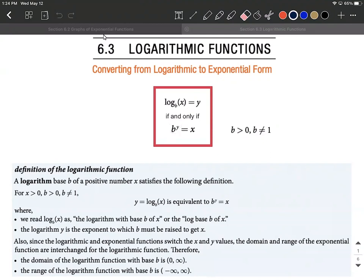Some other things to note on this: when we're dealing with exponential functions we said our base had to be positive, had to be greater than zero and it couldn't equal one. The same thing is true with our base—it has to be greater than zero or positive and not equal to one in the logarithmic format as well.